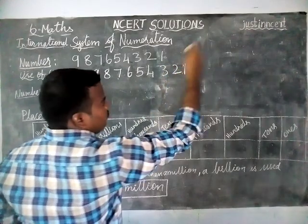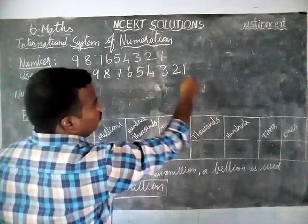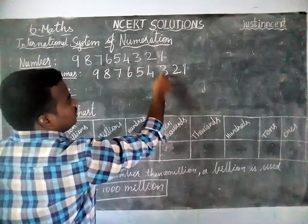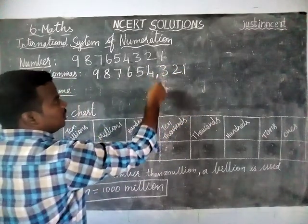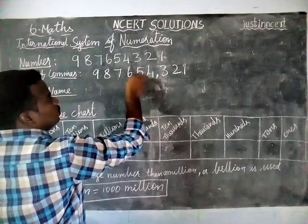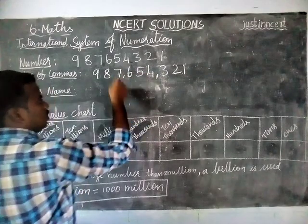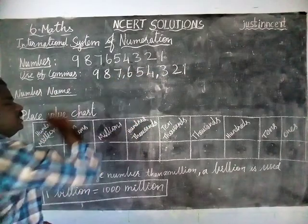987654321. From the right-hand side: one, two, three digits — one comma; one, two, three digits — one comma; then three digits. This gives us 987,654,321.